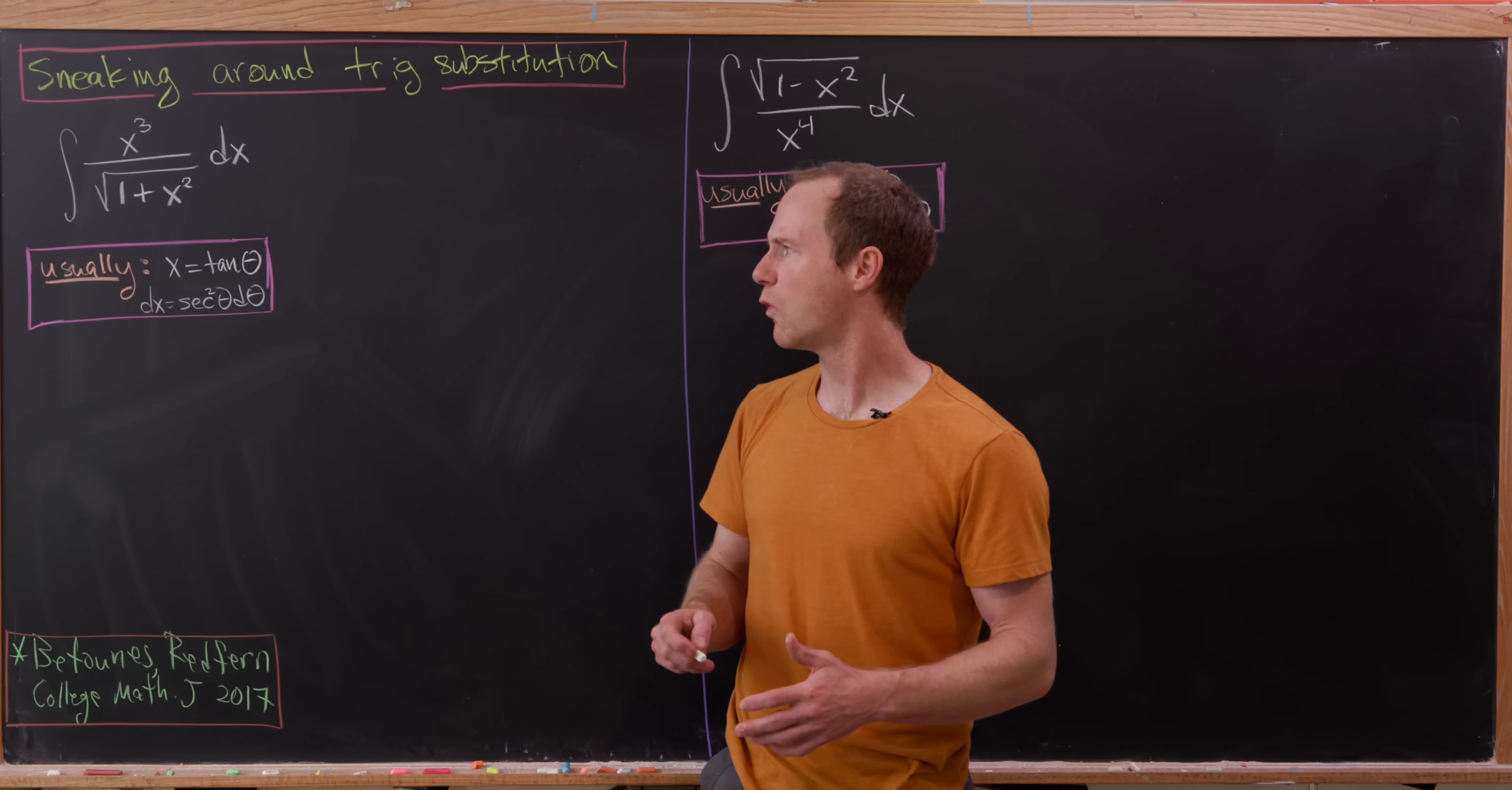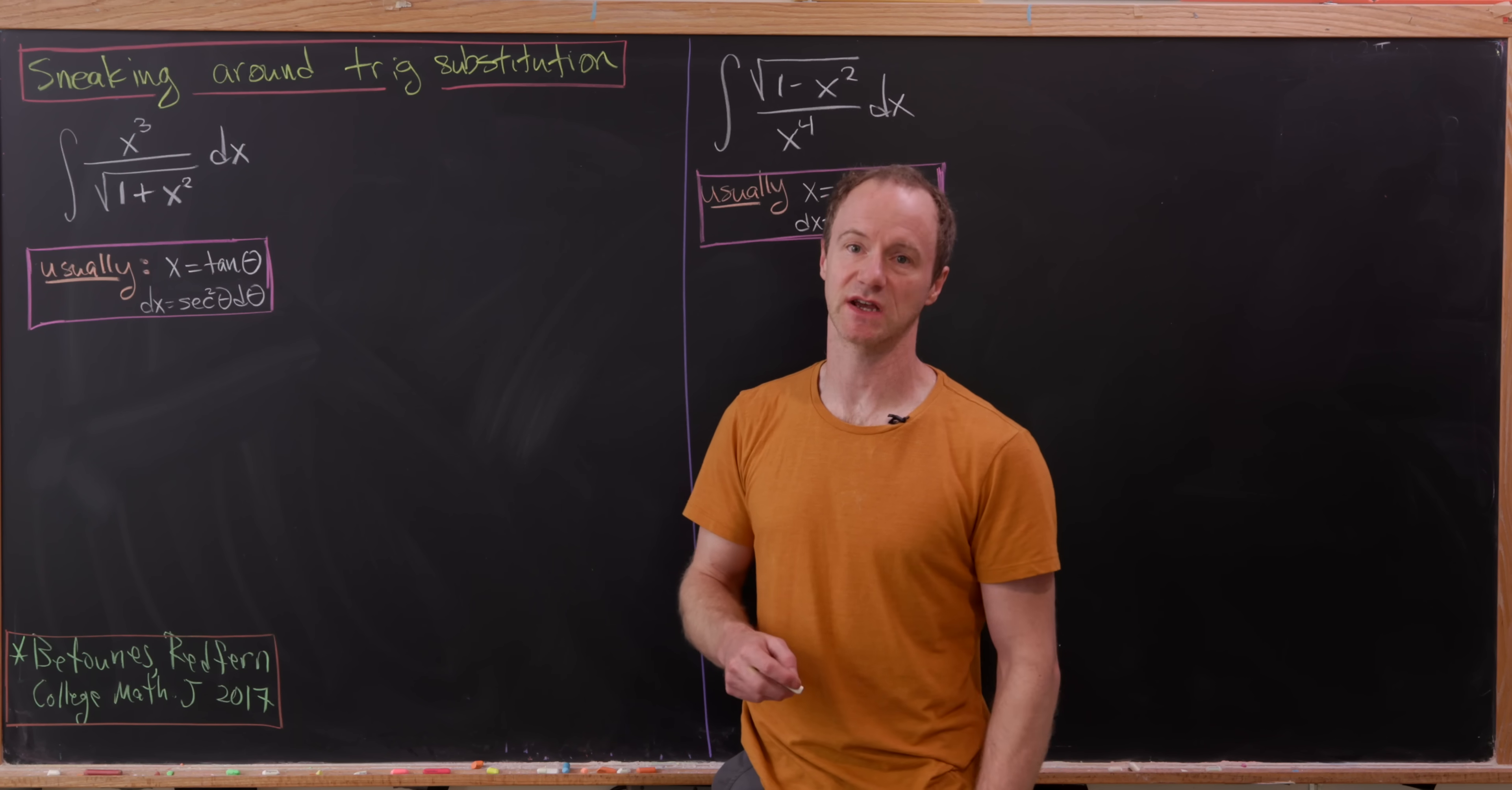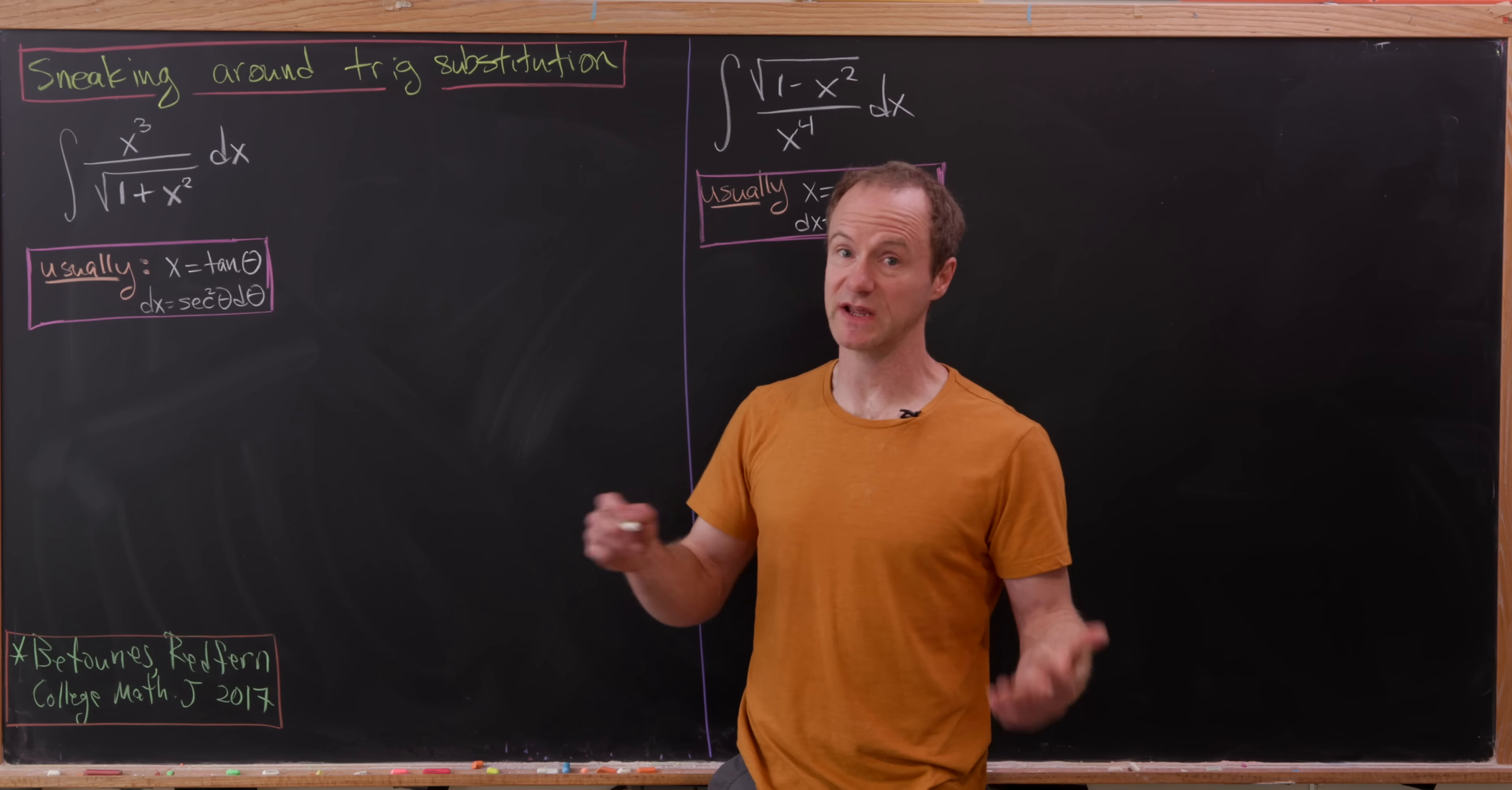But then, 1 plus x squared will be 1 plus tangent squared. And then you can use a tangent secant identity to help simplification. But what we'll do here is something a little bit different. Because, like I said, to start this, we want to do away with trig substitution.